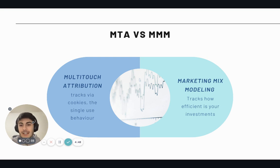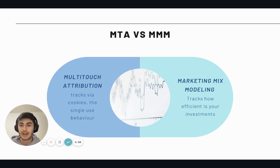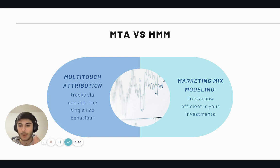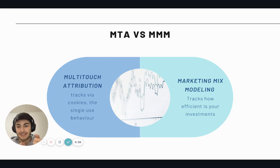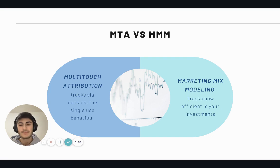After iOS 14, MTA has numerous disadvantages. With new cookie restriction policies, there are really big discrepancies between what Google Analytics is tracking and reality. For example, if someone browses in private mode the user isn't tracked properly, or if they don't click 'accept cookies' you won't track that user well. So there are significant limitations right now in multi-touch attribution.